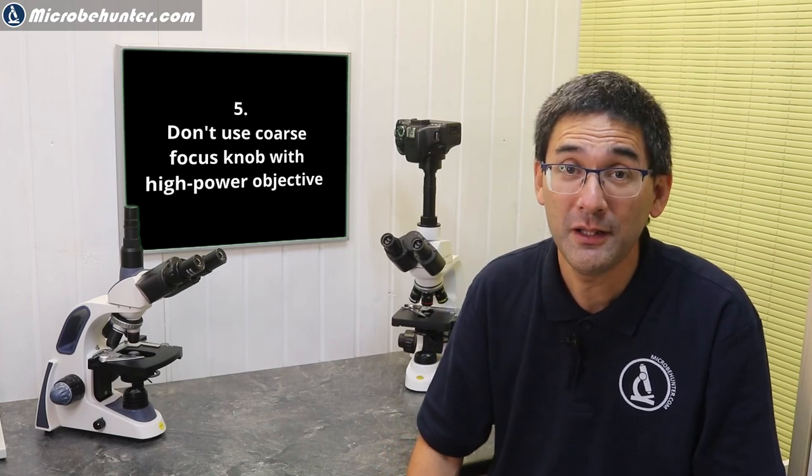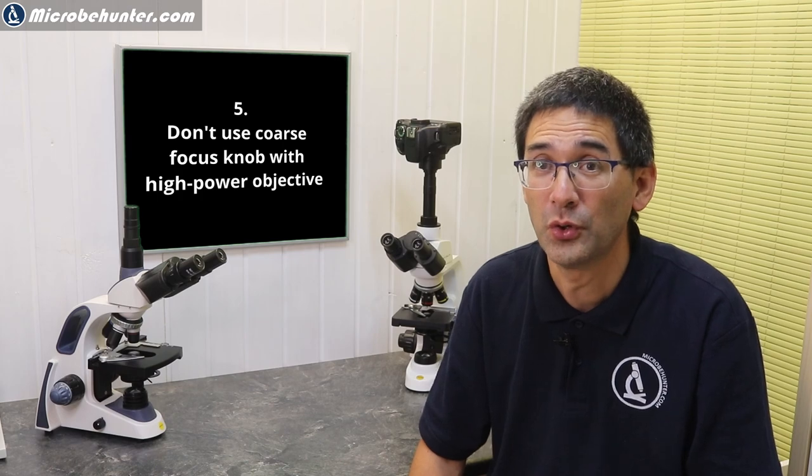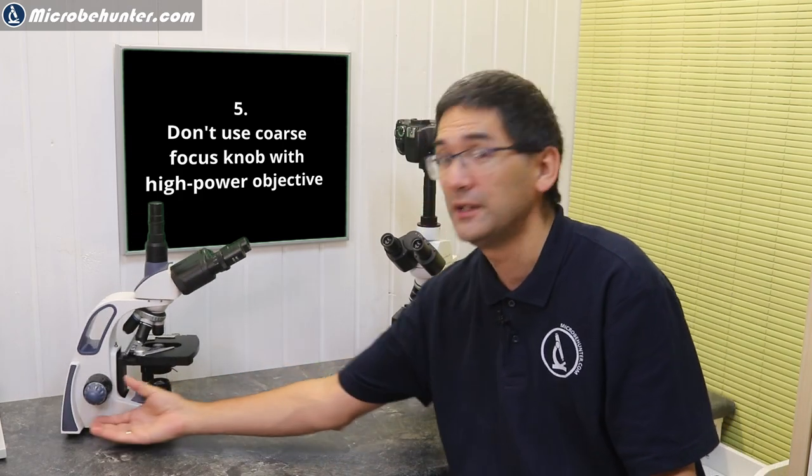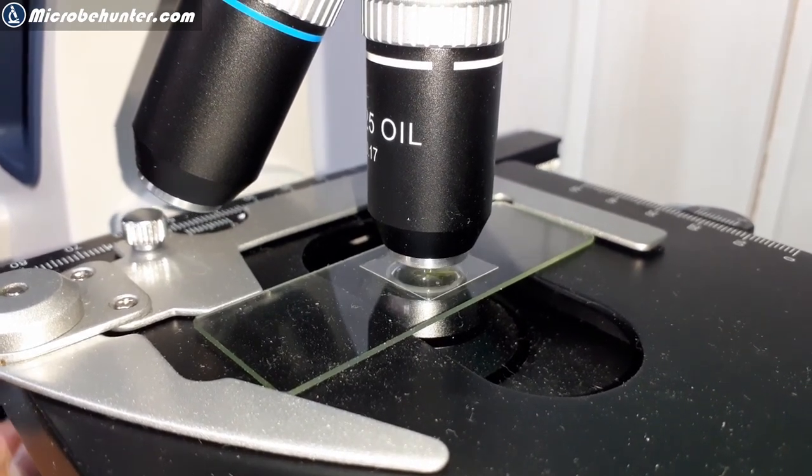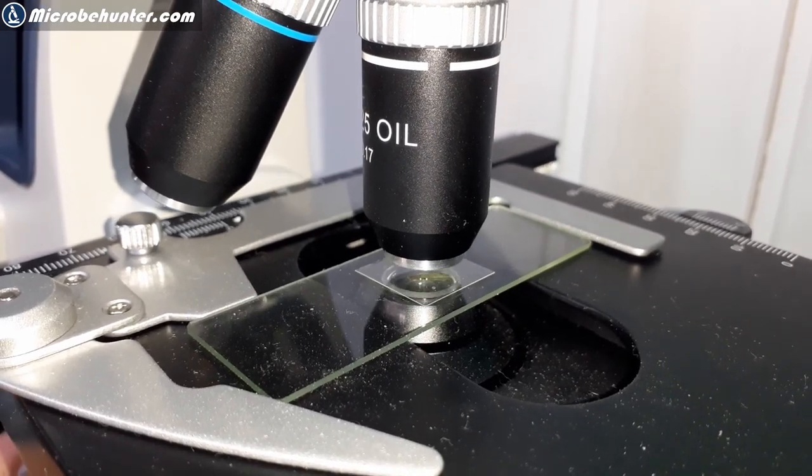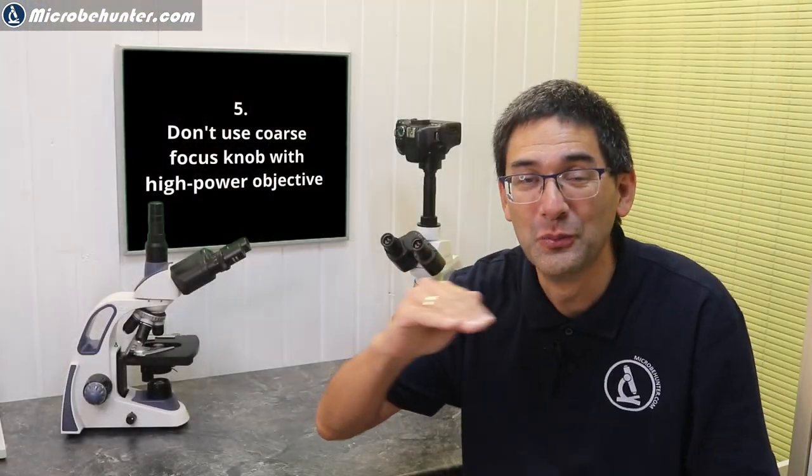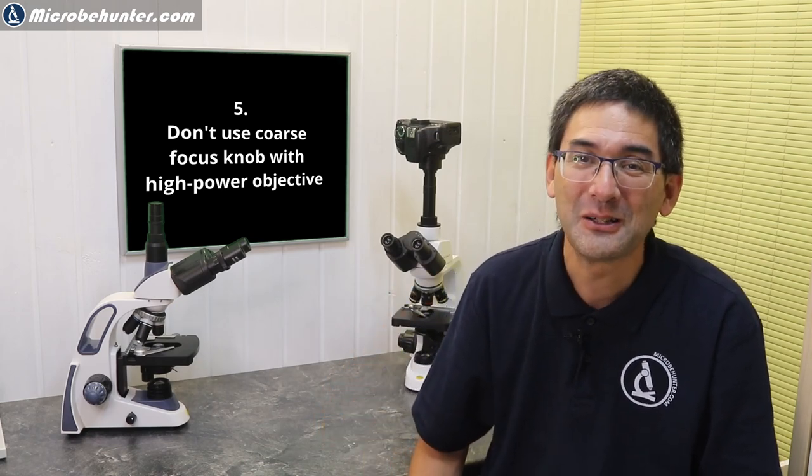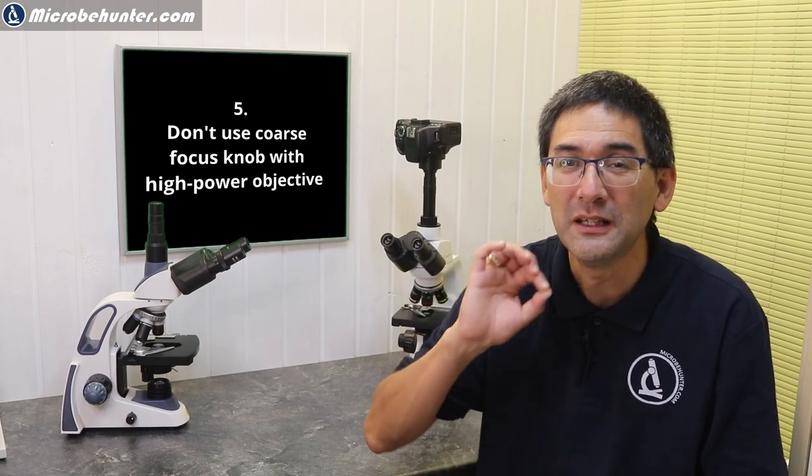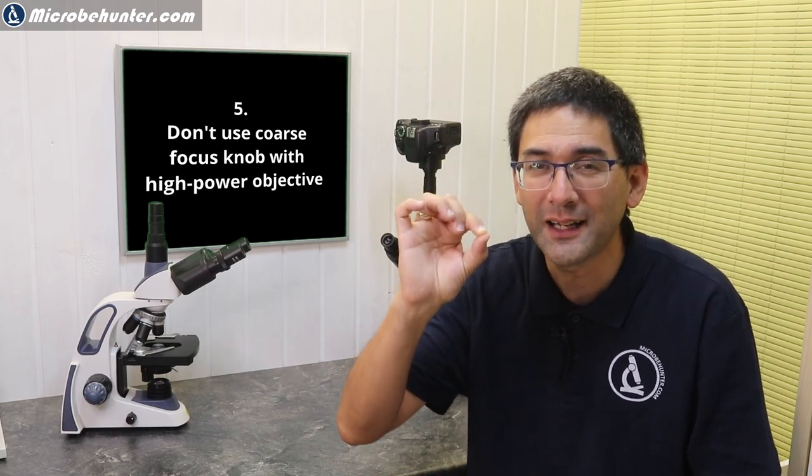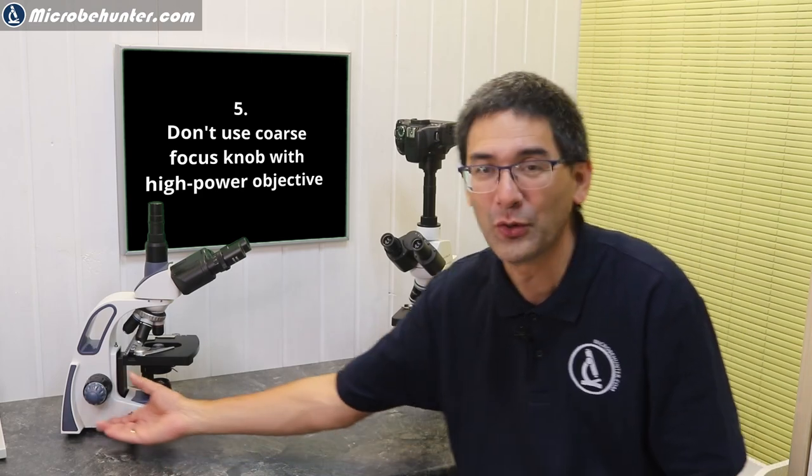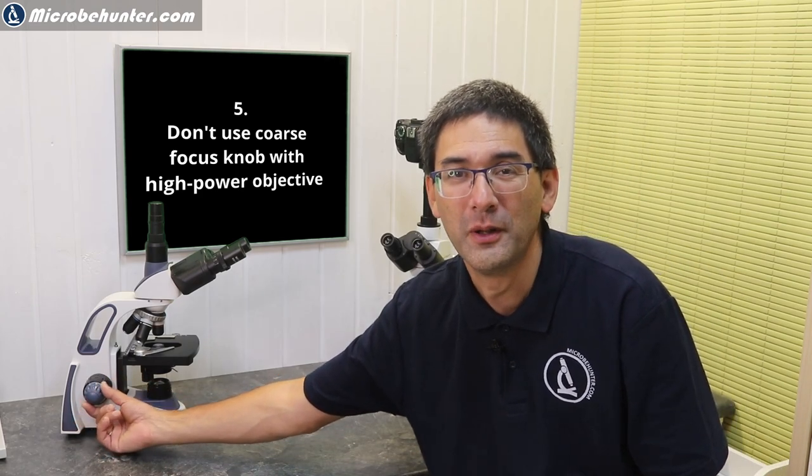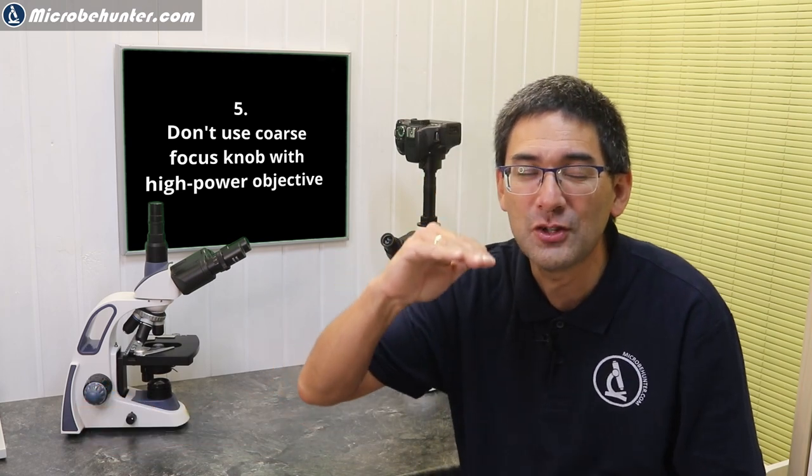Mistake number five can also damage the objective: using the coarse focus knob, which is the big one, with high power objectives. This can cause objectives to crash into the specimen slide, damaging both the objective and slide. It's especially bad if you've crashed into it and then move the slide horizontally, which can scratch the objective. Some high power objectives are spring-loaded so the front part retracts when contacting the slide, but this is only an emergency solution. Only use the fine focus knob for high power objectives—the small one that raises the stage slightly.